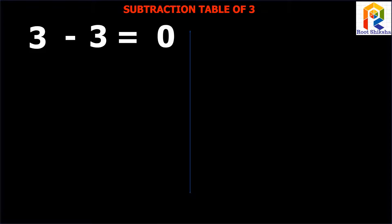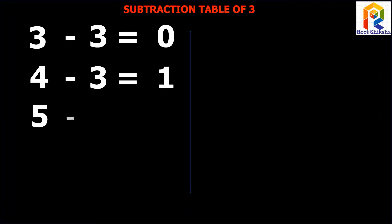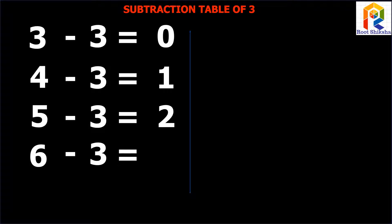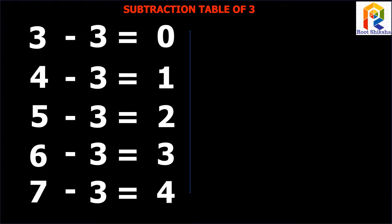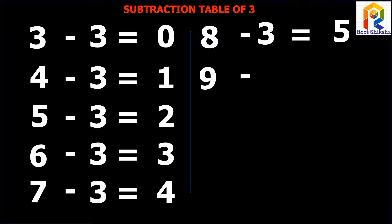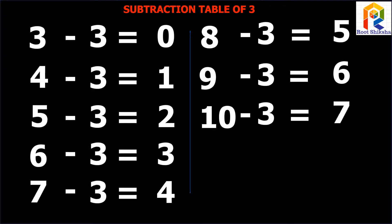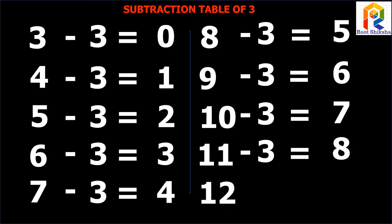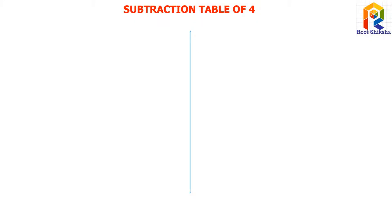Subtraction Table 3. 4 minus 3 equals to 1. 5 minus 3 equals to 2. 6 minus 3 equals to 3. 7 minus 3 equals to 4. 8 minus 3 equals to 5. 9 minus 3 equals to 6. 10 minus 3 equals to 7. 11 minus 3 equals to 8. 12 minus 3 equals to 9. Subtraction Table 4.